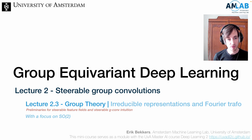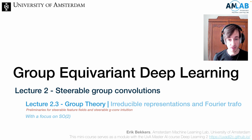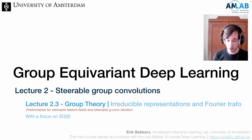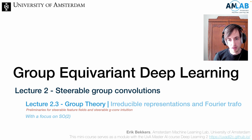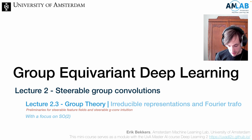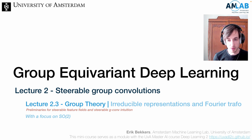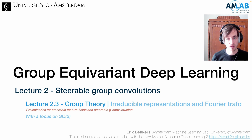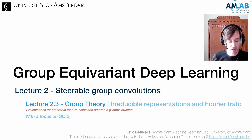You already noticed in the previous two videos that we talked a lot about representations. In order to properly formalize and understand what's happening in the steerable group convolution setting, we need to know a little bit more about representations and introduce the idea of irreducible representations and the corresponding Fourier transform on the groups, which has been mentioned various times already. I hope it becomes more intuitive in this video.